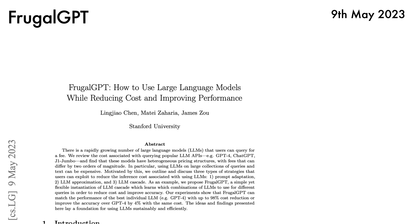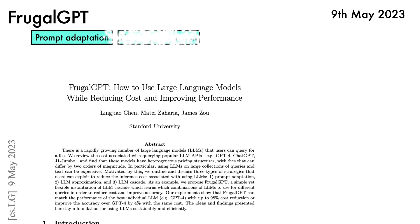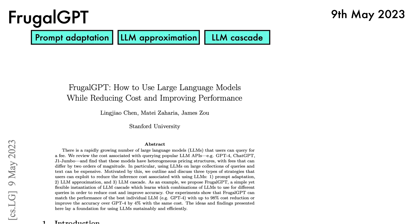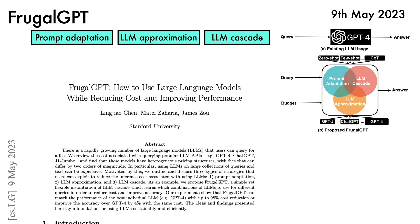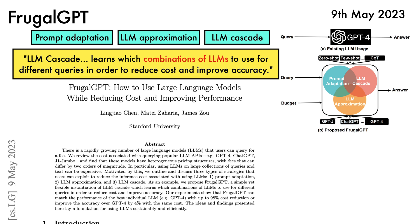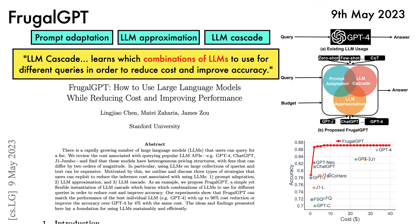FrugalGPT proposes to use techniques like prompt adaptation, LLM approximation, and LLM cascade to reduce cost. Rather than passing queries directly to a large language model like GPT-4, FrugalGPT uses a combination of these three techniques to produce an answer, where the LLM cascade learns which combinations of LLMs to use for different queries in order to reduce cost and improve accuracy. In their experiments, they find that FrugalGPT achieves strong price performance relative to individual models.